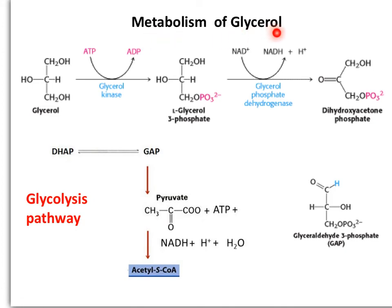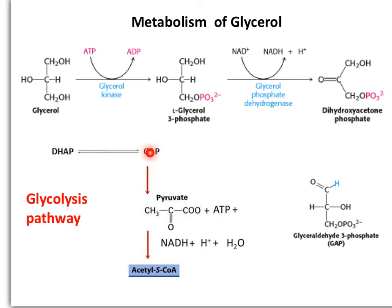The metabolism of glycerol requires the phosphorylation of a unit of glycerol by a kinase at the expense of an ATP molecule, transforming glycerol into hydroxyacetone phosphate, an intermediate from the glycolysis pathway. In this transformation, electrons are also extracted in NADH molecules. This intermediate, the hydroxyacetone phosphate, will isomerize to GAP, which leads to the formation of pyruvate and ultimately acetyl-coenzyme A that can enter the citric acid cycle.